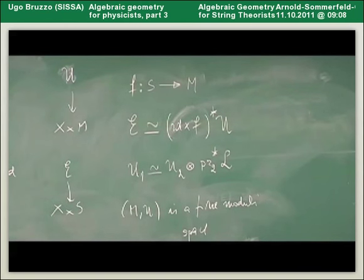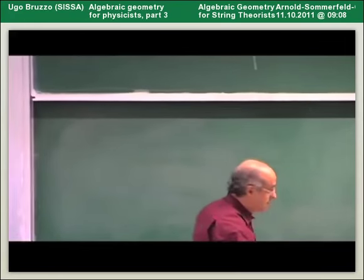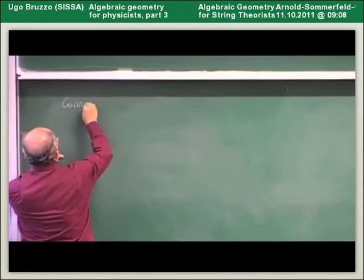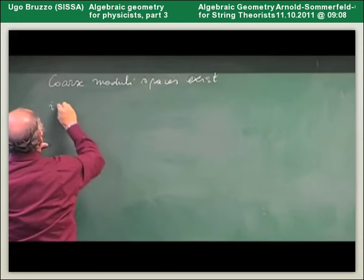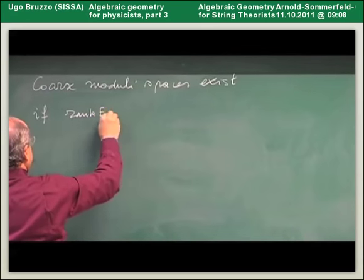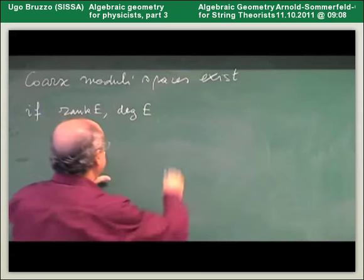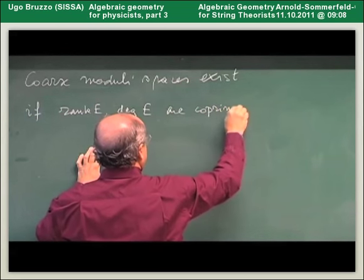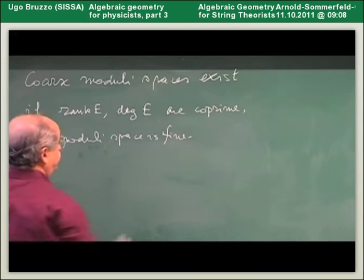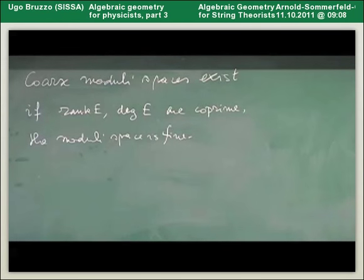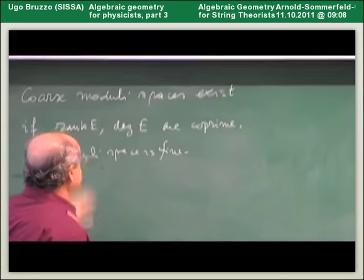On curves, there is a general statement: coarse moduli spaces exist. If the rank of the bundle and its degree are coprime, the moduli space is fine. So on curves we are in a rather good situation: moduli spaces exist and under a simple condition they are fine.